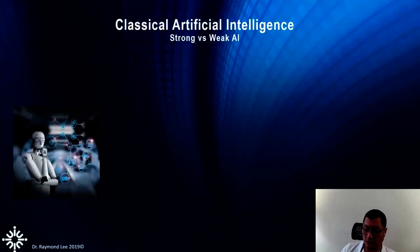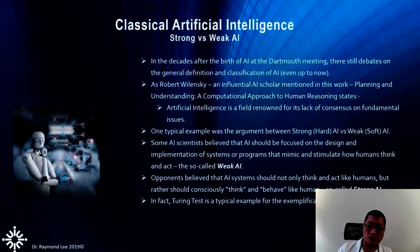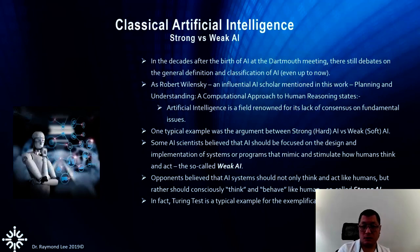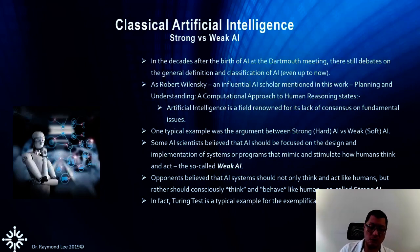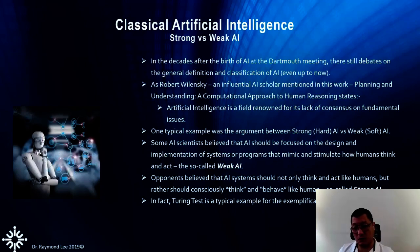Another very important concept is what we call strong AI and weak AI. As you go through many websites and books, it's been an ongoing argument since the 1950s up to now. From Robert Wilensky, an influential AI scholar who mentioned in his book 'Planning and Understanding: A Computational Approach to Human Reasoning,' the AI field requires consensus on a fundamental vision — which is true, because all the time different professors at different AI centers have different definitions of AI.